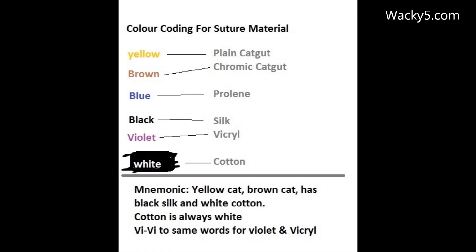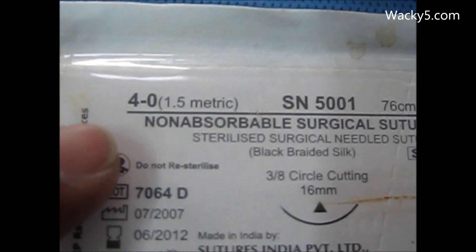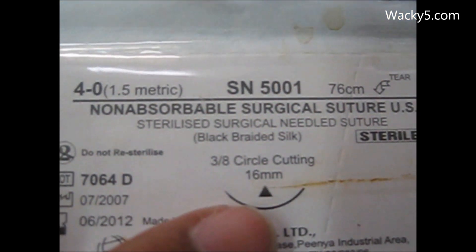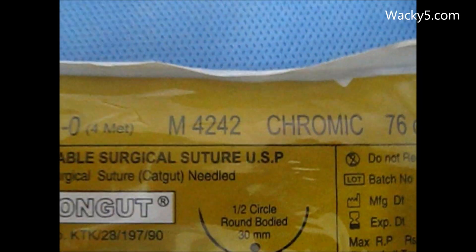The color coding for the suture material can be easily remembered with the help of a mnemonic: 'Yellow cat, brown cat has black silk, white cotton, low BP.' BP is blue for prolene, and cotton is always white. VIVI is the same word for violet and the Vicryl color. So yellow is catgut, brown is chromic catgut, violet is Vicryl, blue is prolene, black is silk, and white is cotton.